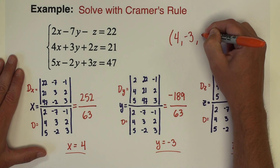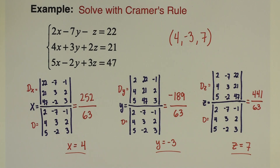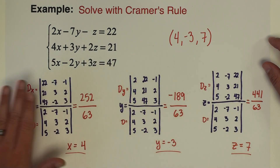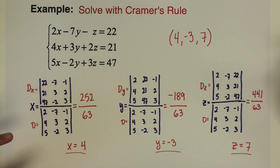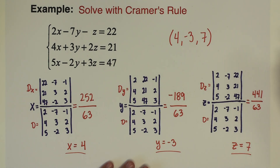So our solution to the system is (4, negative 3, 7). You'll practice this on your assignment for this lesson. You might decide that doing all these three by three determinants is a lot of work and more computational investment than you want to make — if so, you can always go back to substitution and elimination. I do think Cramer's Rule is a nice quick easy way to handle the simple two by two systems, since those determinants are much quicker to compute.